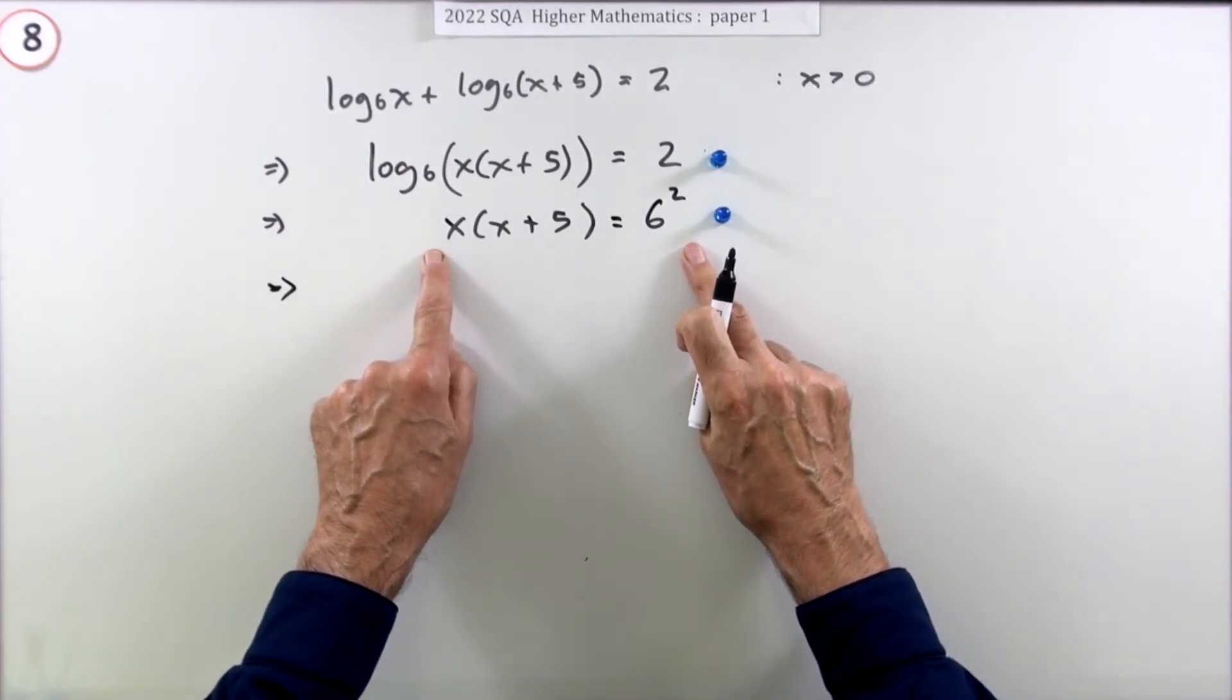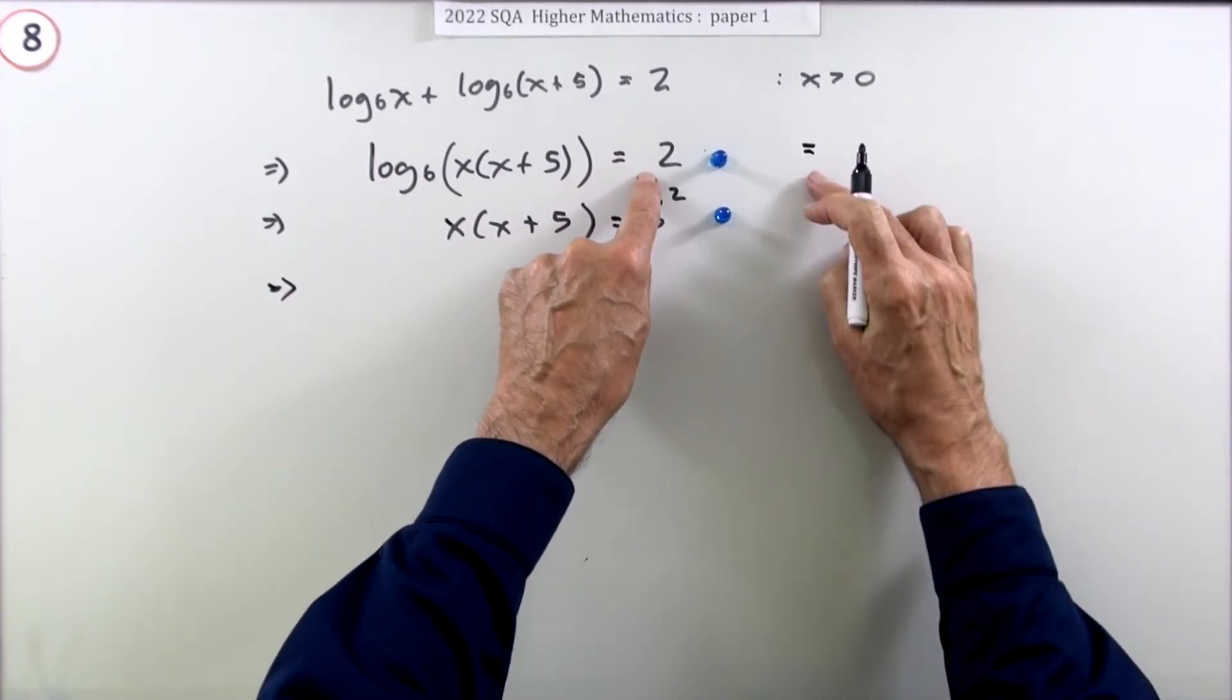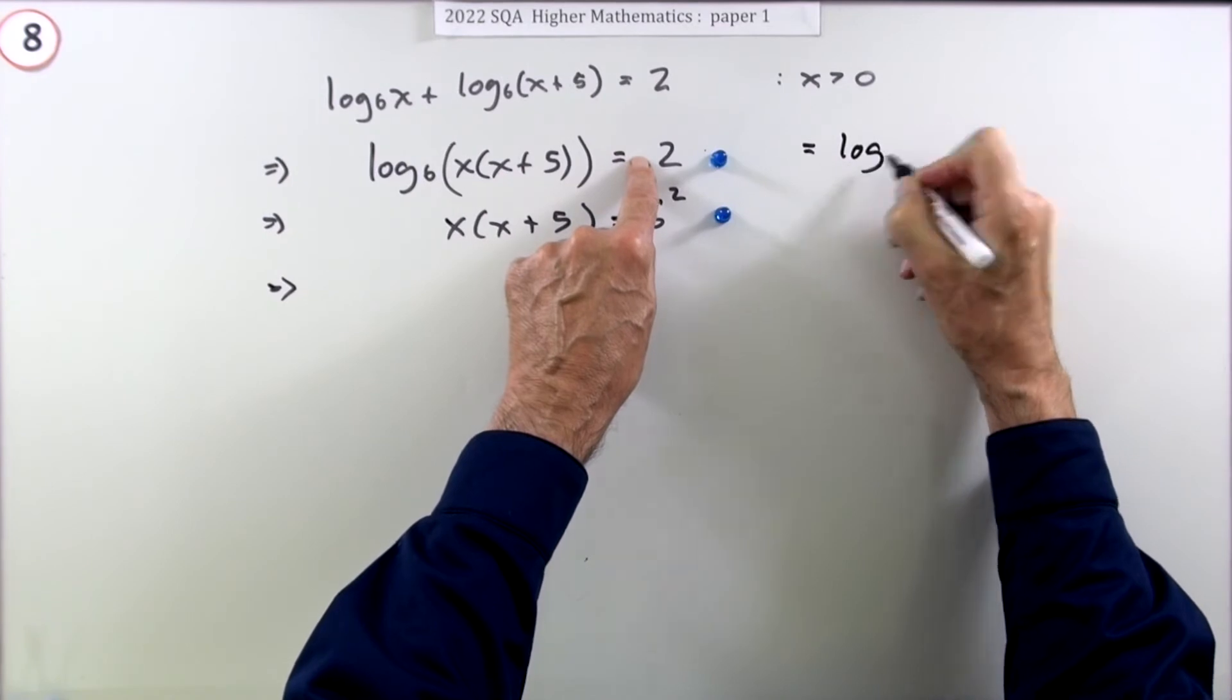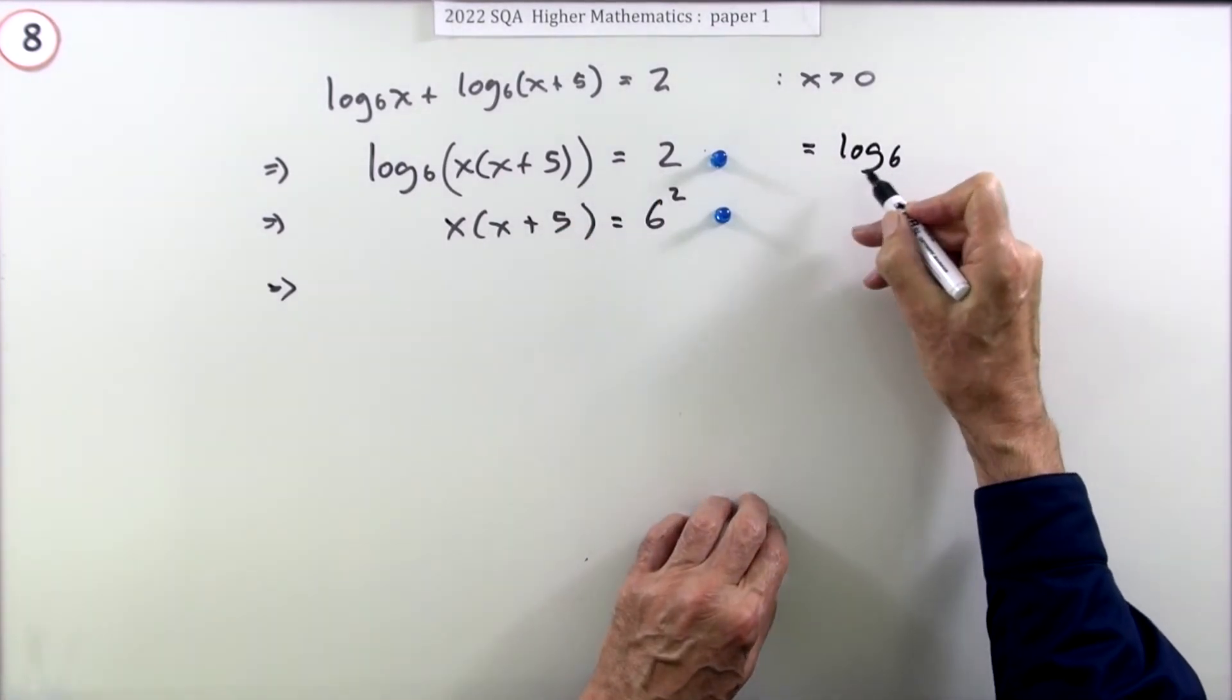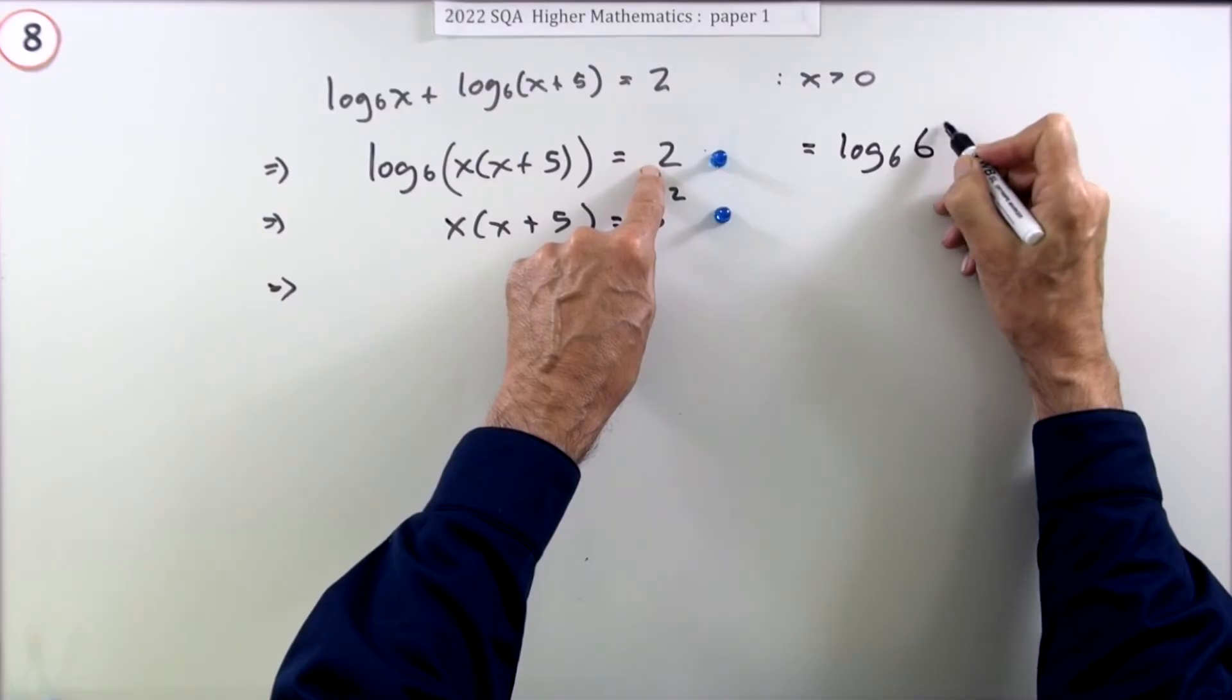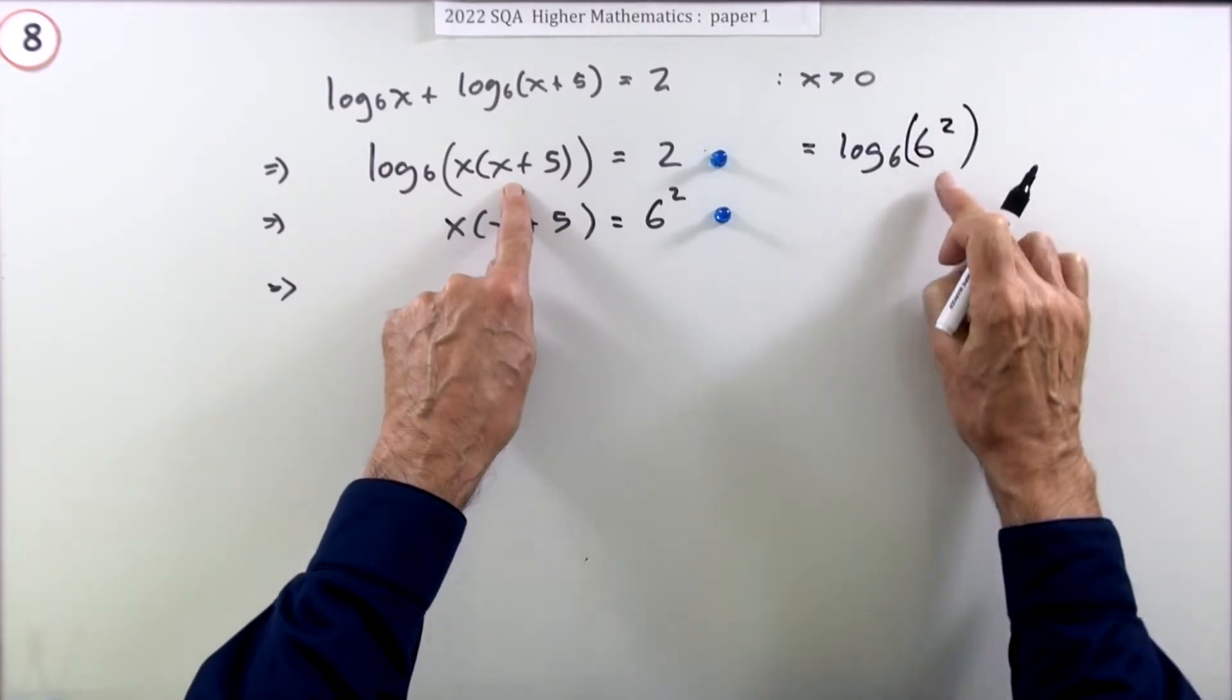Now at this point there is another way you could go through this. Up here, since you've got a logarithm equal to something, you could turn that something itself into something worse - turn it into a logarithm. Because that will be the logarithm to base 6 of something. Remember, logarithm base 6 says what power of 6 gives this thing? Well what power of 6 gives 2? Well that's obviously 6 squared. So you could write log base 6 of this is log base 6 of that.